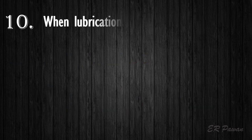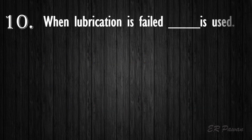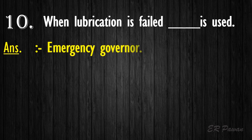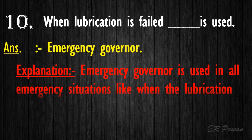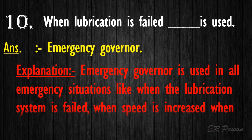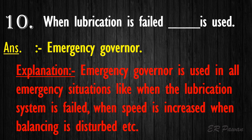Question 10: When lubrication is failed, emergency governing is used. The emergency governor is used in all emergency situations — when the lubrication system has failed, when speed is increased beyond limits, when balancing is disturbed, and so on.